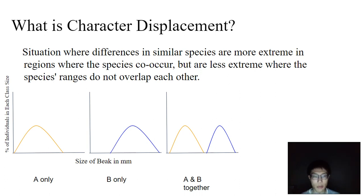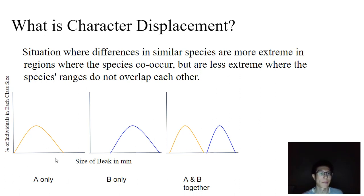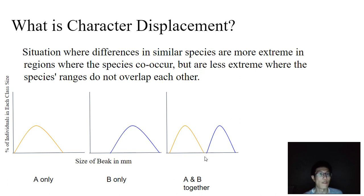And so let's look at this situation over here. We have three islands to make it a little bit more simple — islands 1, 2, and 3. On island 1, there's only species A. On island 2, there's only species B. And on island 3, species A and B are found together.